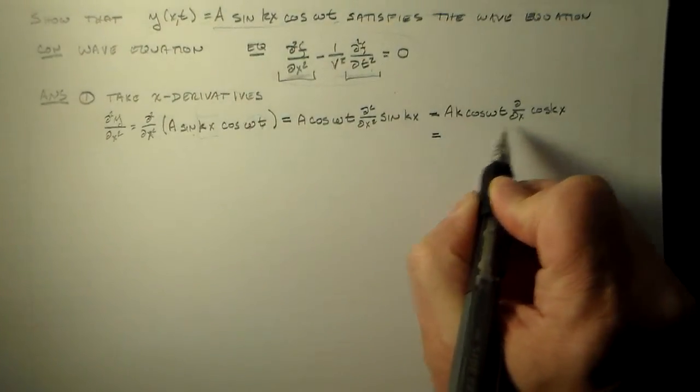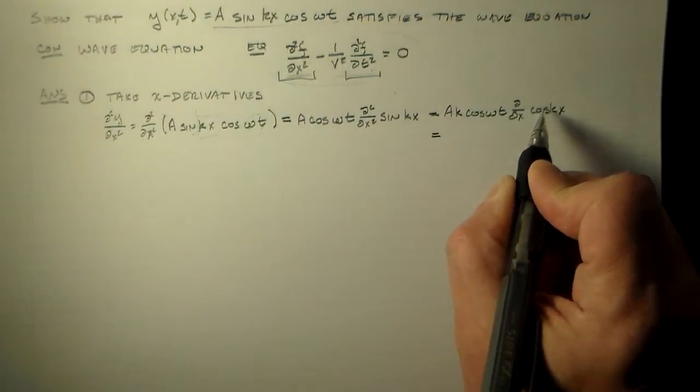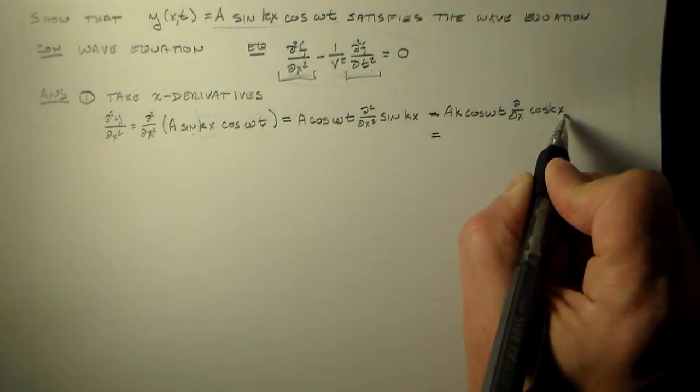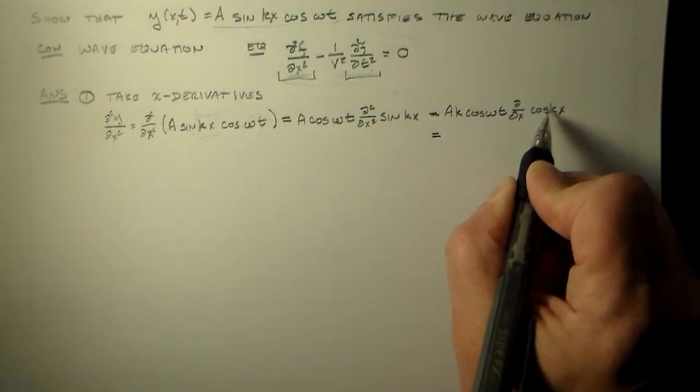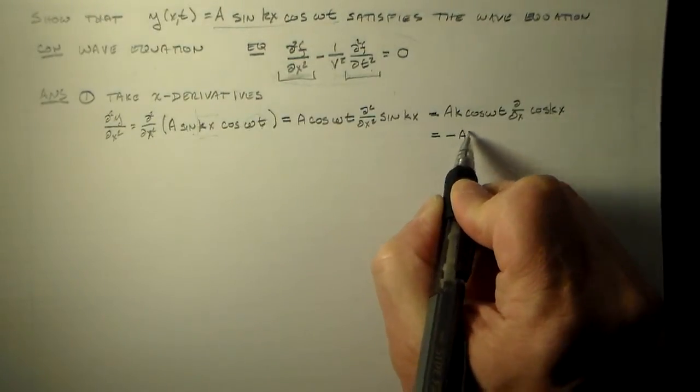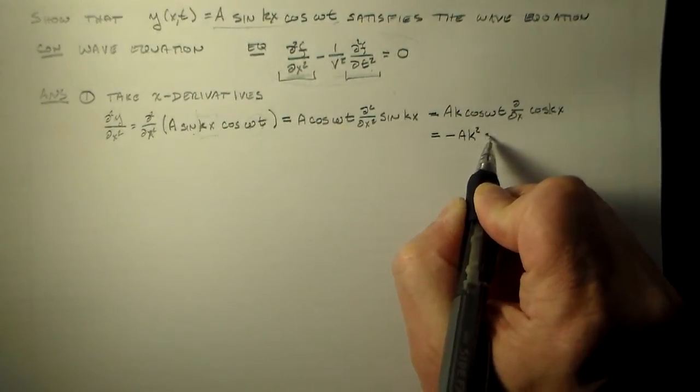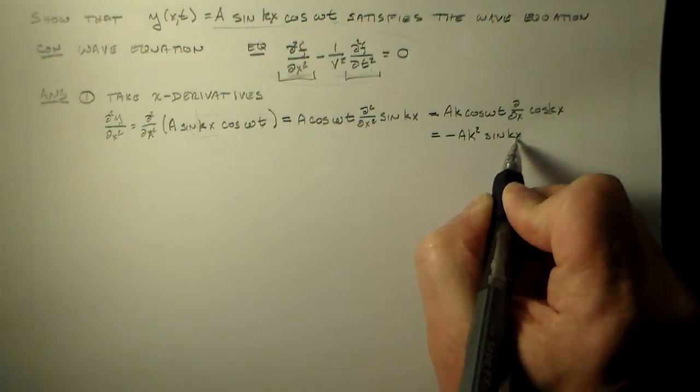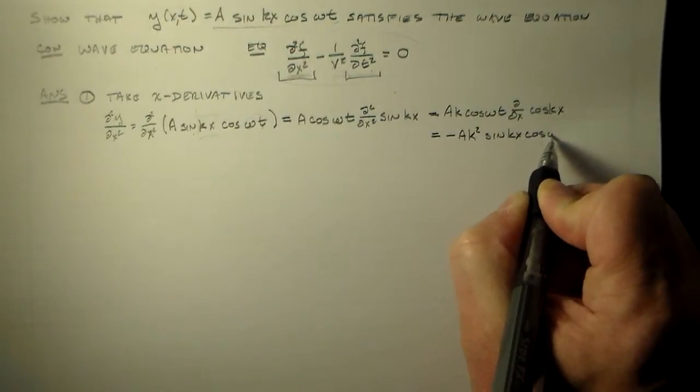So that's minus k cosine, or minus k sine kx, right? So minus ak squared, sine kx, cosine omega t.